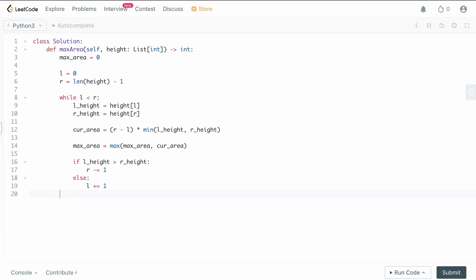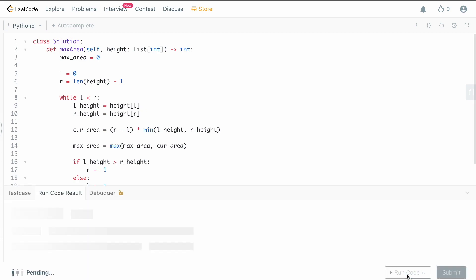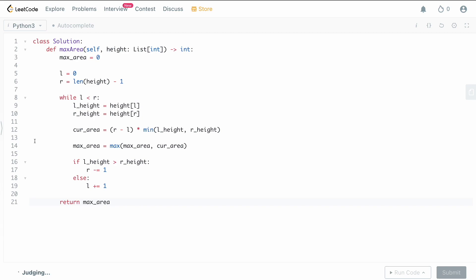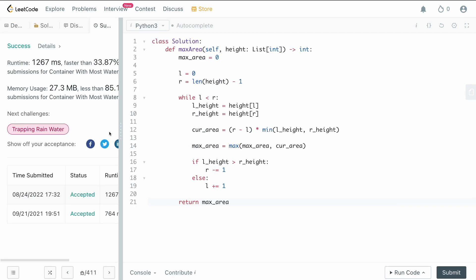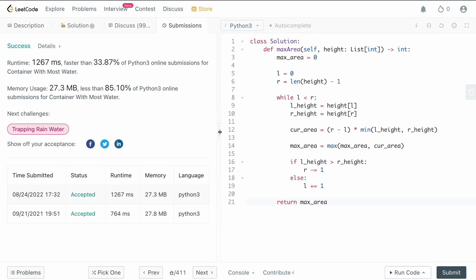So we're going to do that while left is less than right. And at the end, all we need to do is simply return our max_area. So let me just run this, make sure I haven't accidentally misspelled anything. And looks good, we can submit it. So once we get our solution here, we can see that it's accepted, and we're good to go.